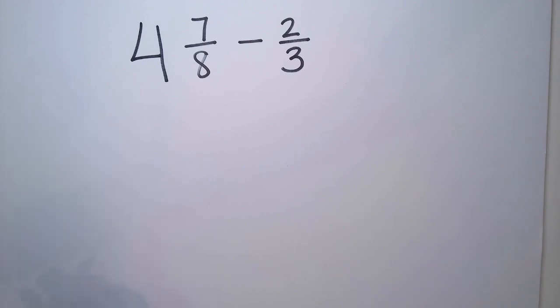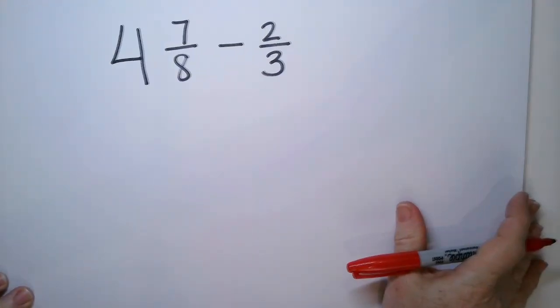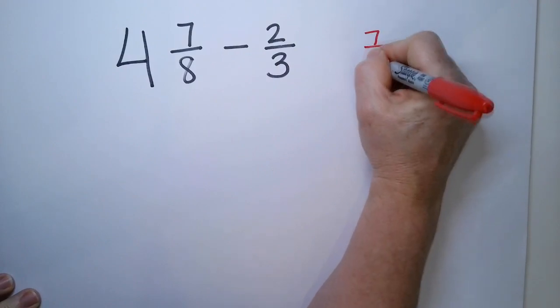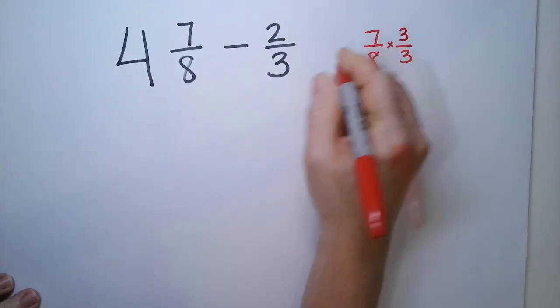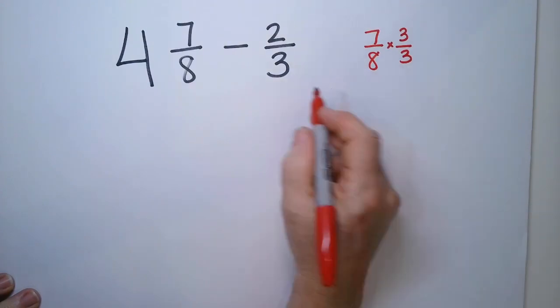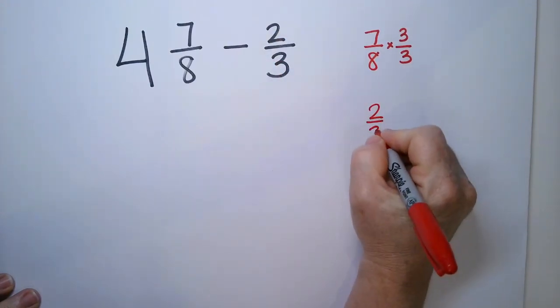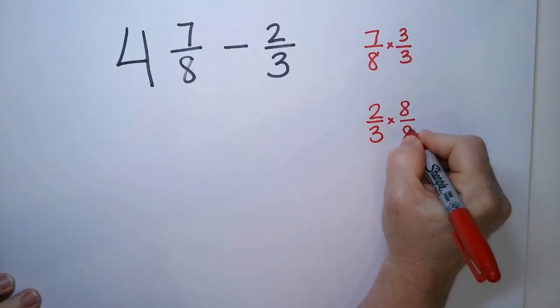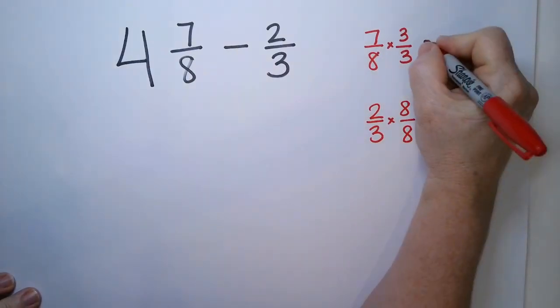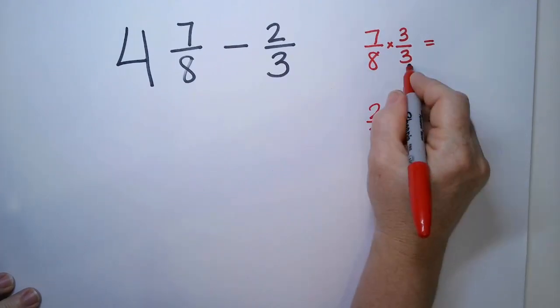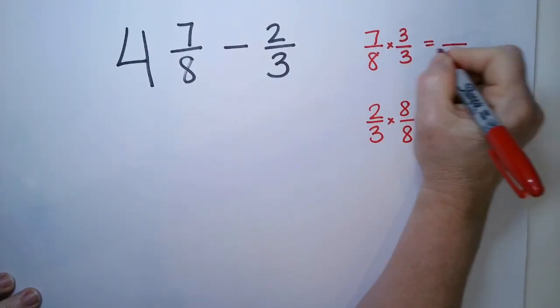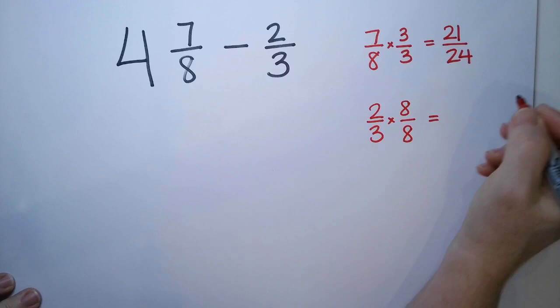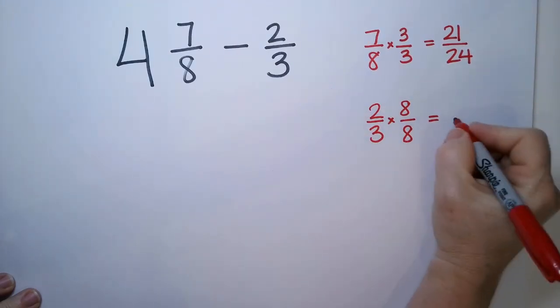So I am going to scale up the seven eighths. Here, I'll do it over here. Seven eighths. I'm going to multiply top and bottom by three over three, so by this number. And then for two thirds, I'm going to multiply top and bottom by eight. And that way, I'll be sure to have one that works for both of them. Eight times three is 24. Seven times three is 21.